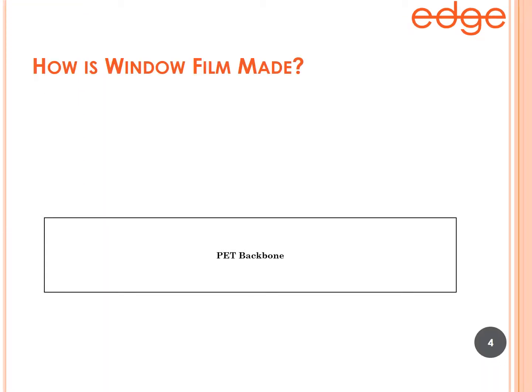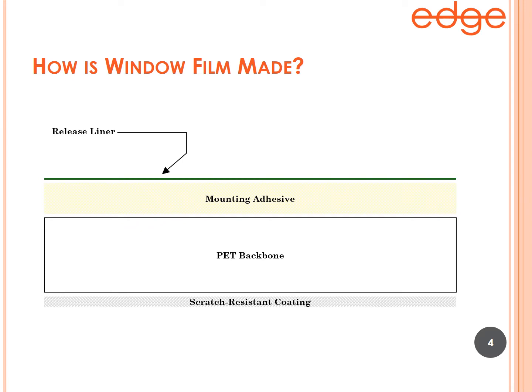Our manufacturing overview — this is a graphic simplification, but at its core a window film, whether automotive or architectural, has a backbone of PET or polyester. To that PET backbone you add a scratch-resistant coating, whose purpose is to provide a scratch-resistant surface both during and after installation so it can last through years of cleaning. On the other side is a pressure-sensitive mounting adhesive.